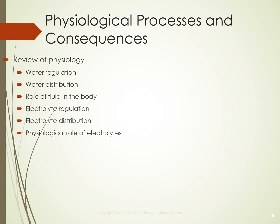Impaired neuromuscular function is a response to plasma concentration changes. Imbalances of potassium, calcium, or magnesium can impair neuromuscular function. A calcium or magnesium deficit causes muscle twitching and cramping. Too much potassium causes flaccid muscle weakness.